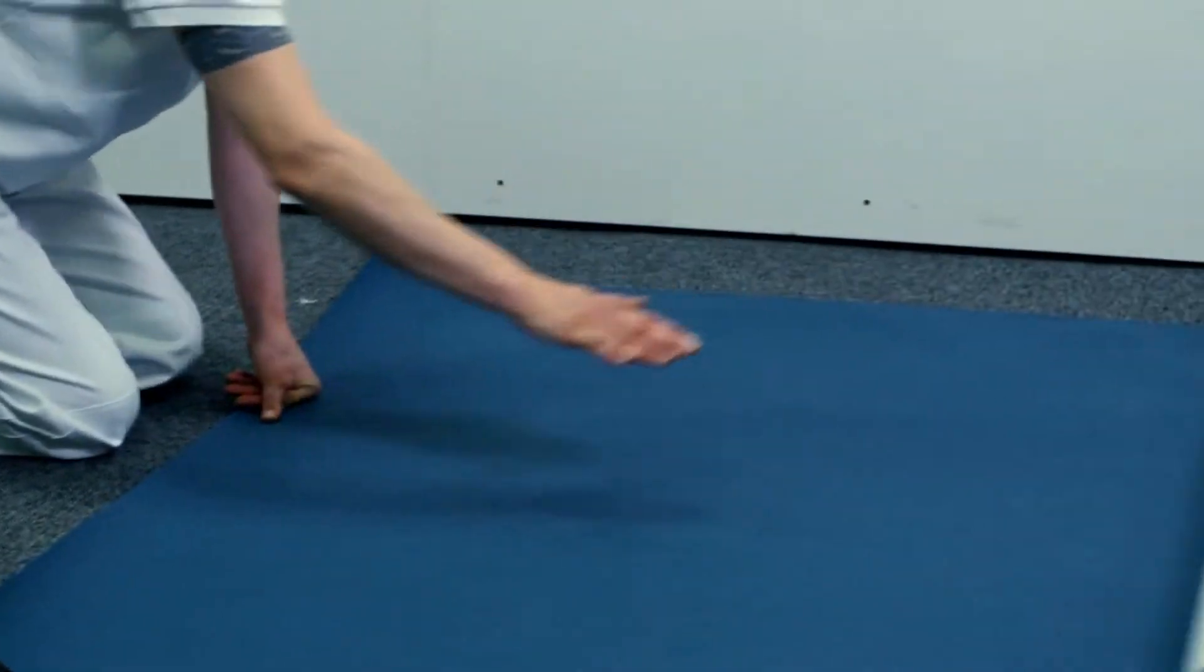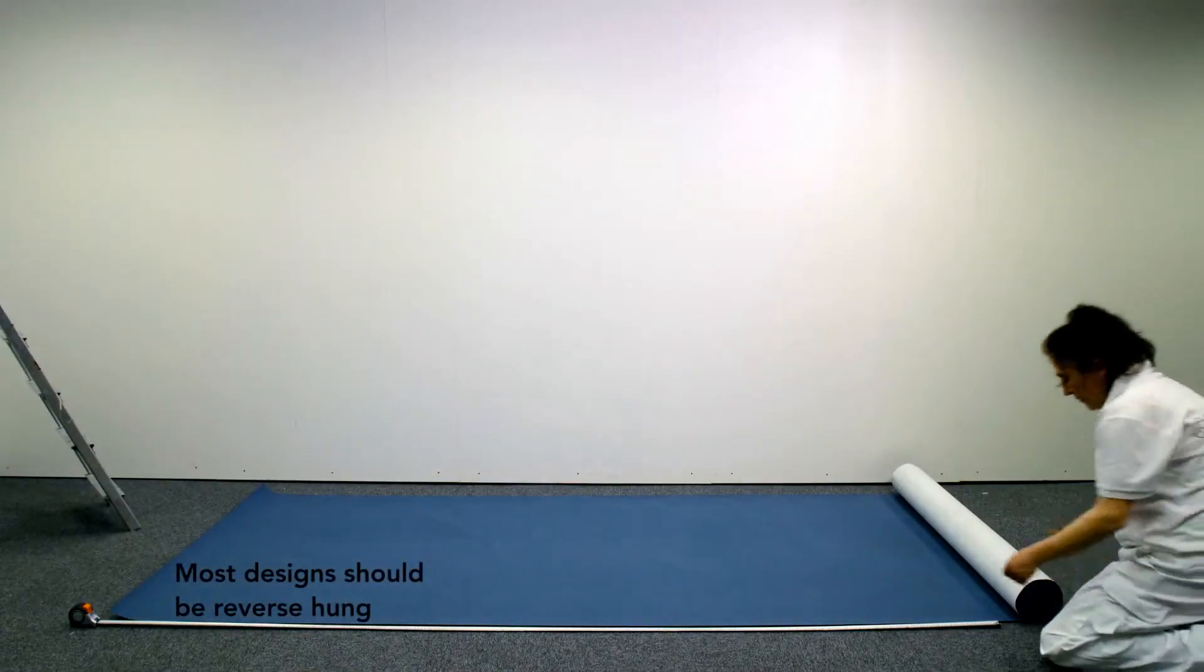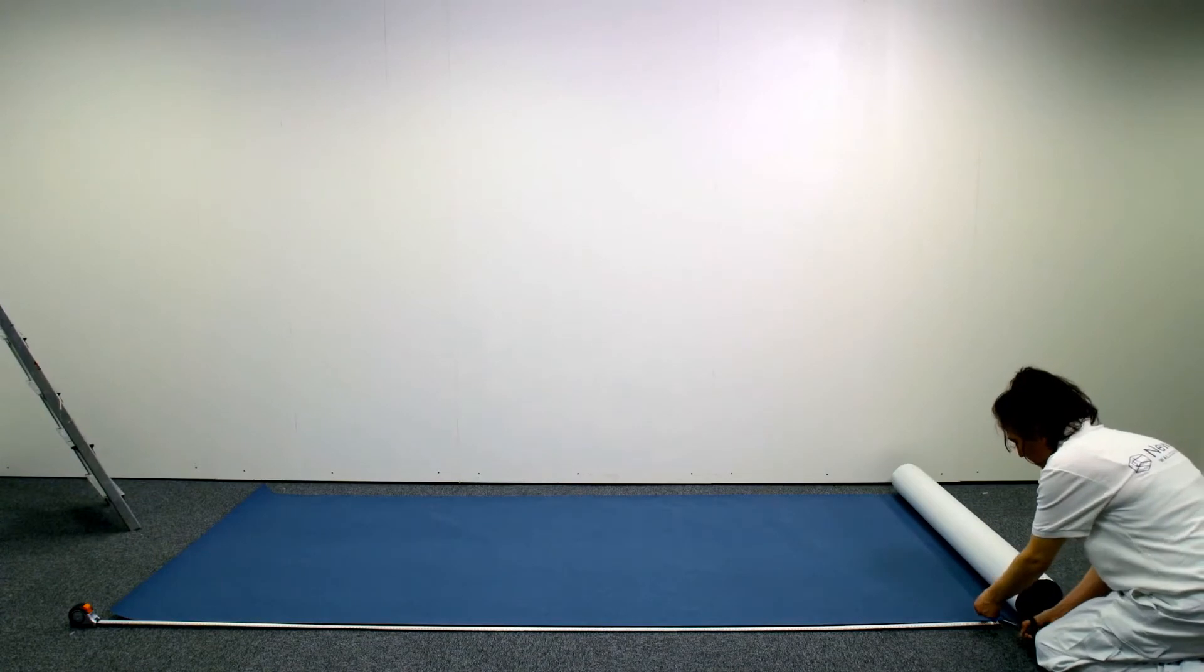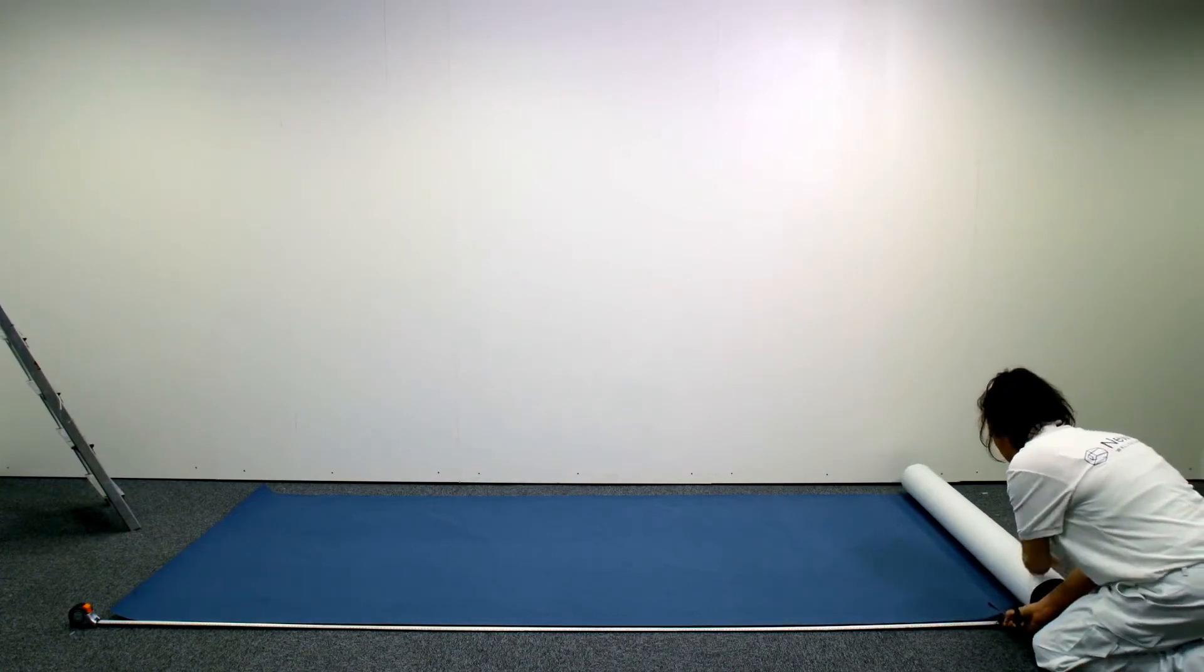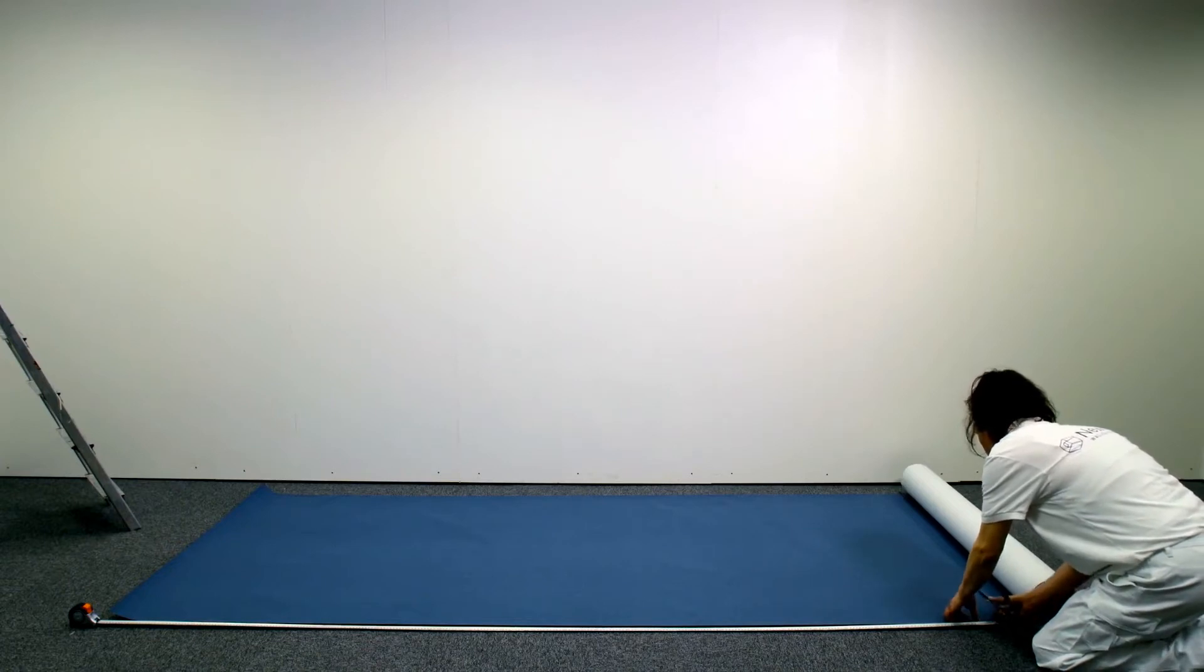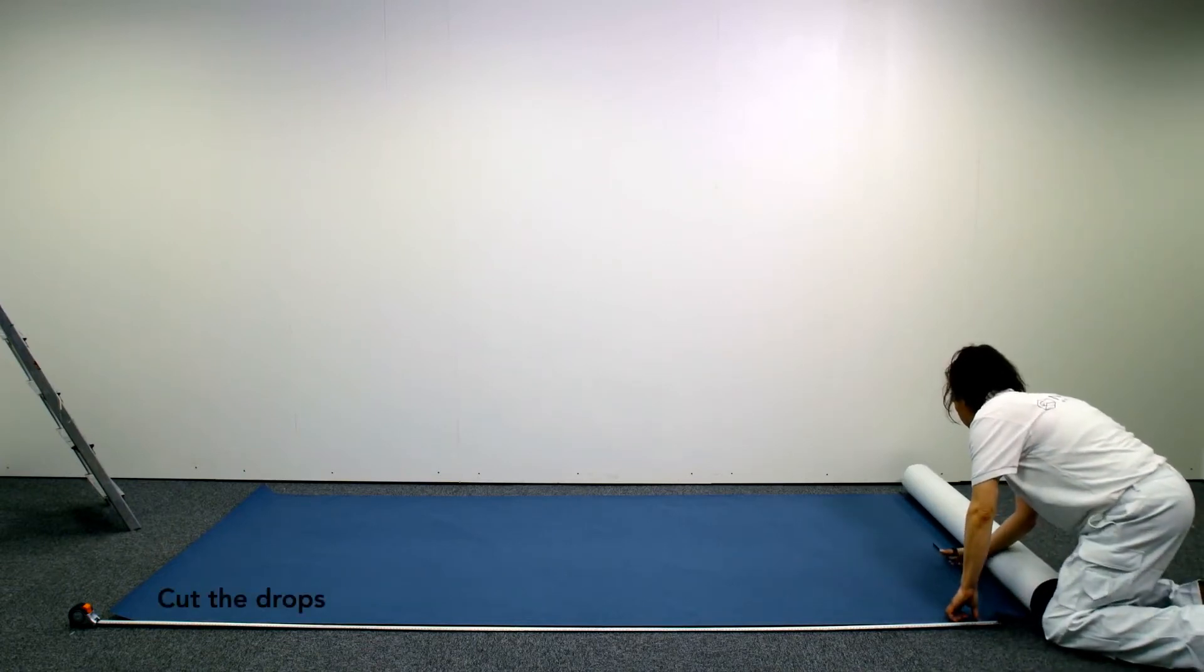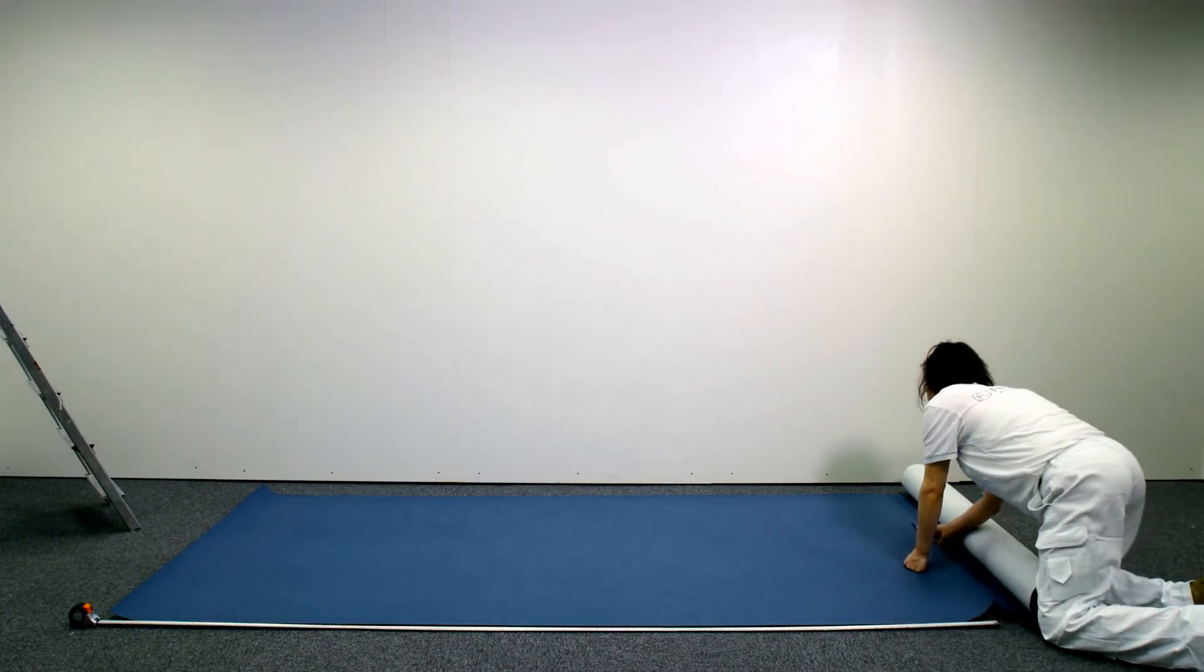Most contract wall coverings should be reverse hung, which eliminates any adverse shading effects. Rolls should be installed in sequence and should always be from the same batch. Cut the drops to size, allowing five centimeter trim top and bottom.